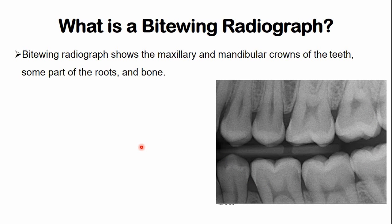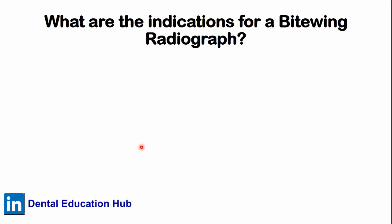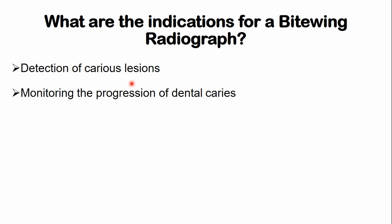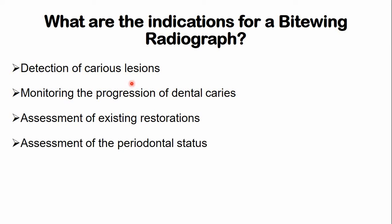The indications of a bitewing radiograph include: detection of various lesions, especially cavities on the proximal surfaces at contact areas which are difficult to locate; monitoring the progress of dental caries; and assessment of existing restorations — for example, you can easily monitor the contours of a proximal restoration using a bitewing radiograph.